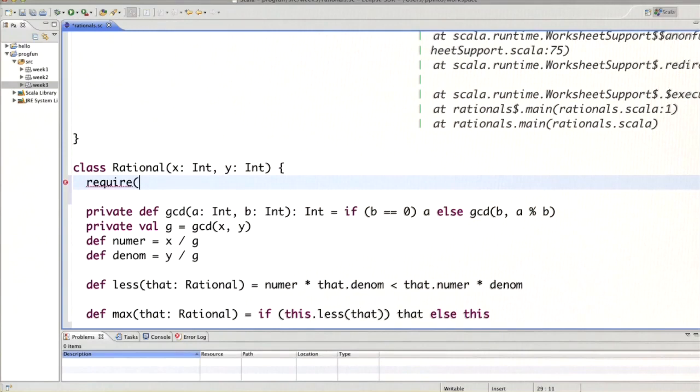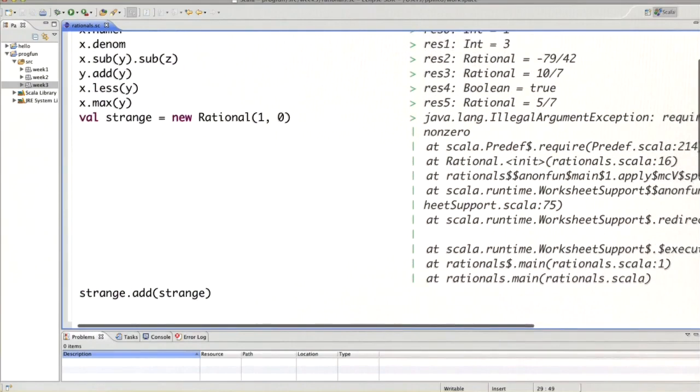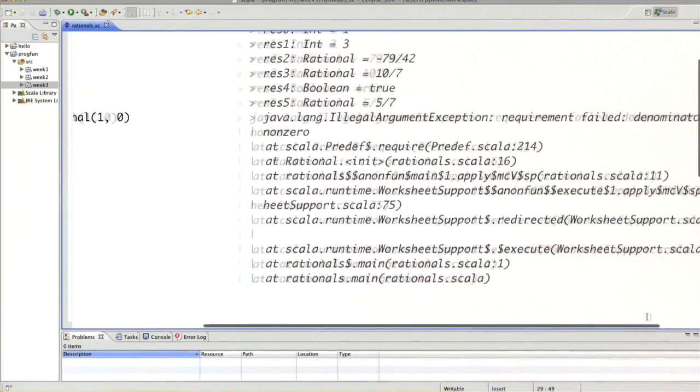So how can we guard against users creating illegal rationals like that? One thing we could do is add a require into our class. We could require that y is different from zero and then we could say denominator must be non-zero.